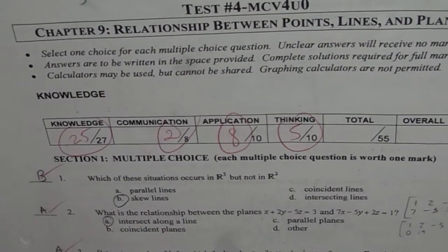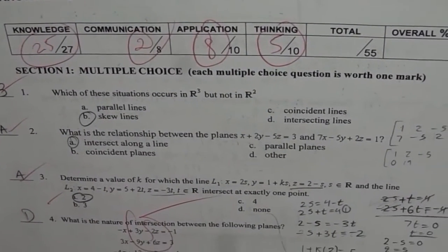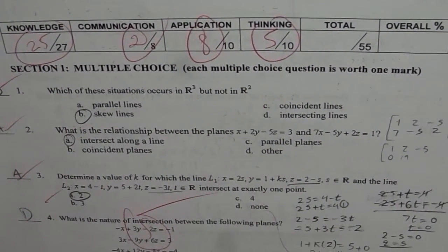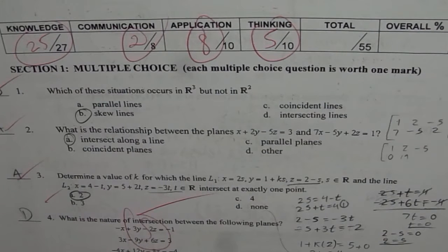I will do some of them in detail. Question number one is: which of these situations occurs in R3 but not in R2? You are given four choices: parallel lines, skew lines, coincident lines, intersecting lines. Clearly the answer is skew lines.